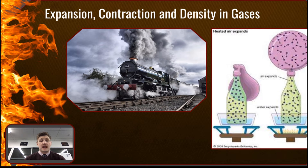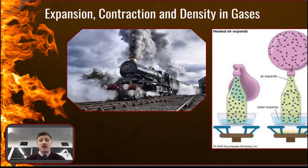As matter expands, the density — the mass of matter in a given volume — will decrease, making it lighter. In a gas, warmer particles moving faster due to increased kinetic energy collide with each other more, creating more space between them, making that area of gas less dense. The less dense gas rises above the colder, more dense gas. This is why hot air rises to the top of a ceiling in a heated house.